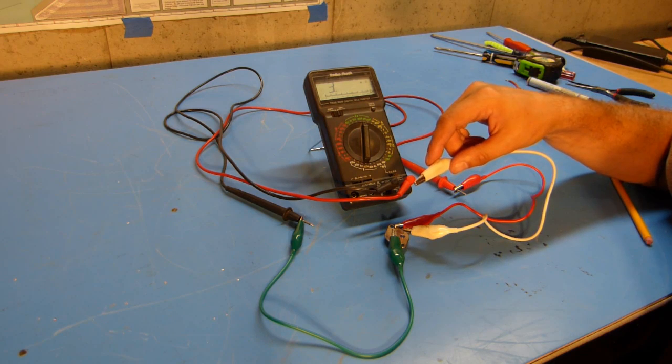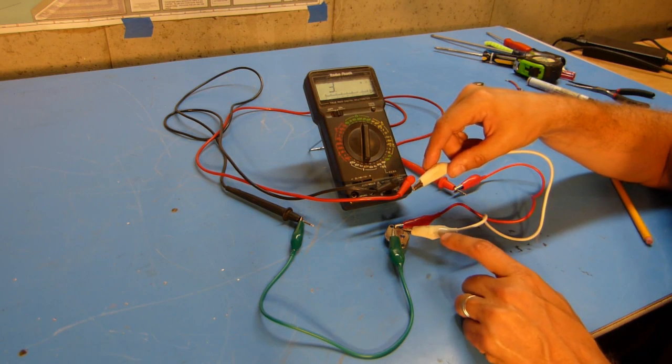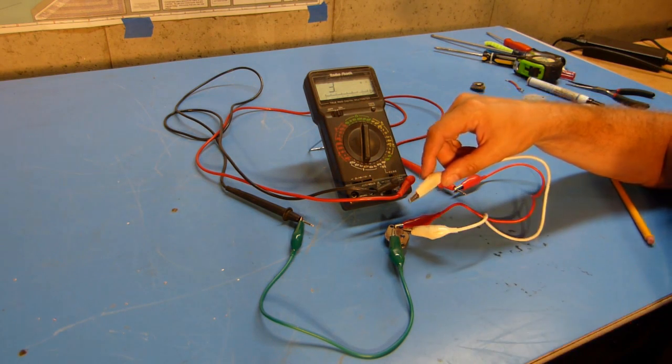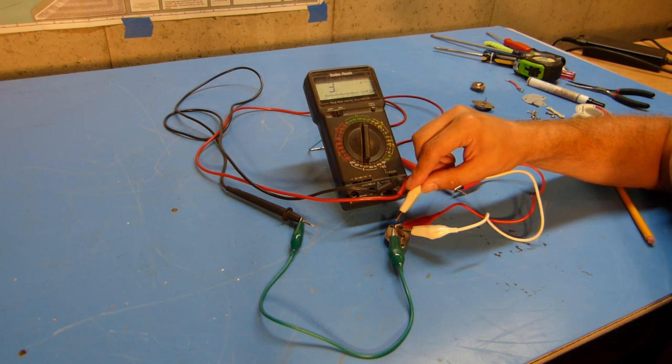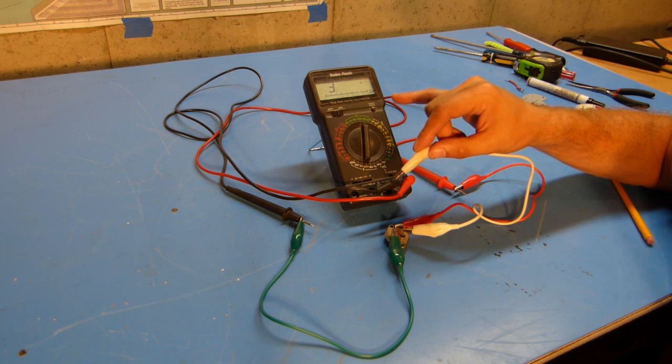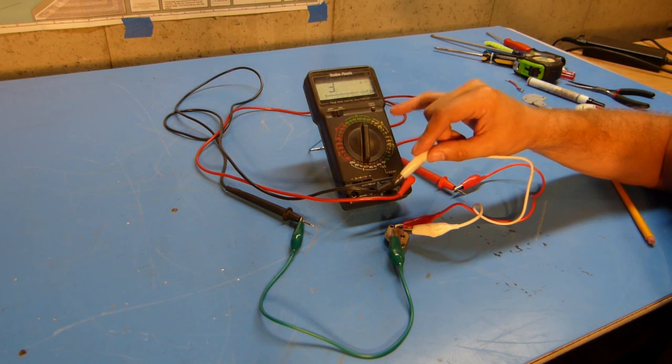So now to test the transistor and see if it turns on I'm going to short the base pin with this white wire to the collector of the transistor to see if it conducts. When I do this you should see the resistance drop to a measurable level.